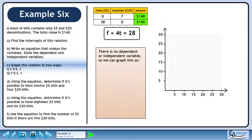In Part C, we'll graph the relation two ways. Since there is no dependent or independent variable, we can graph this as t equals minus 1 over 4f plus 7 or f equals minus 4t plus 28.